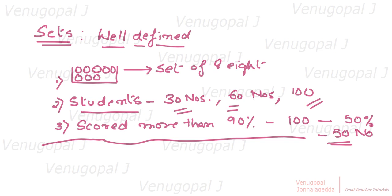Now, if I ask you to make a set of the number of hairs on your head — a set of hairs on your head — that is not defined. It is not defined because you cannot count them specifically. So this is undefined.